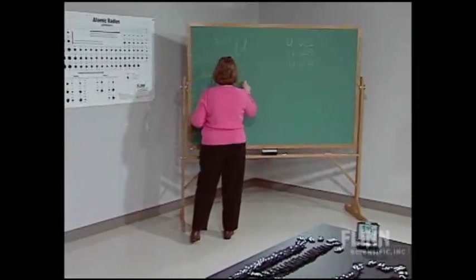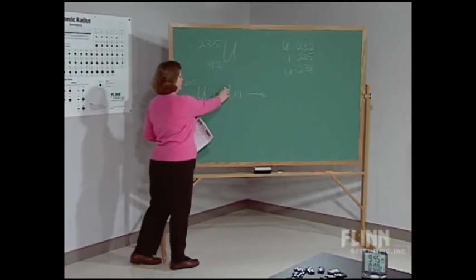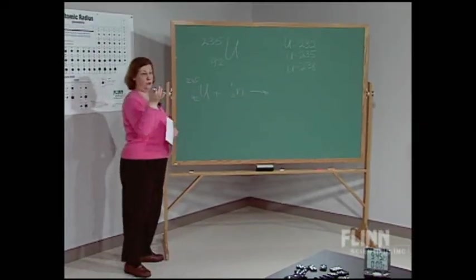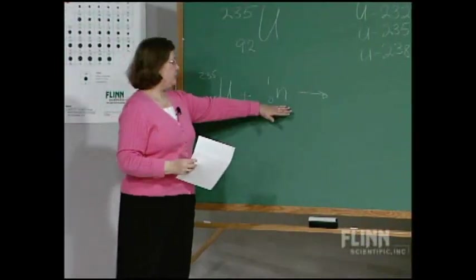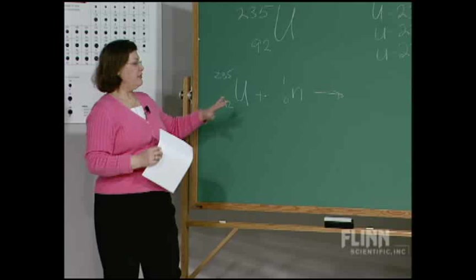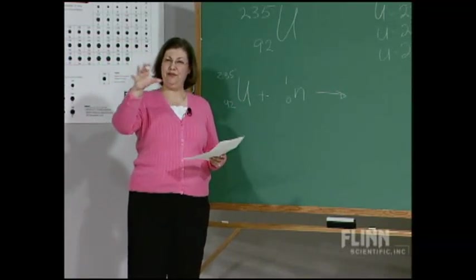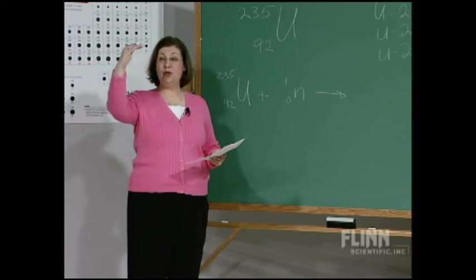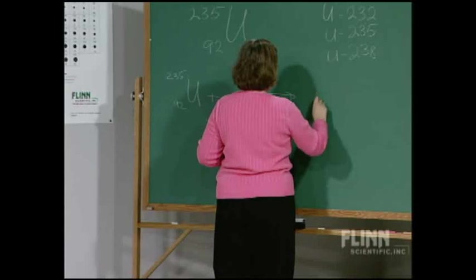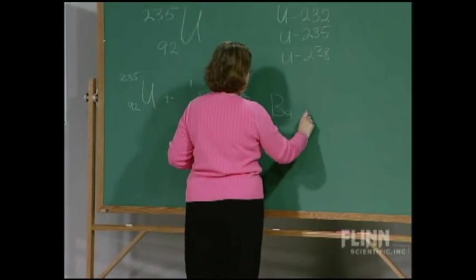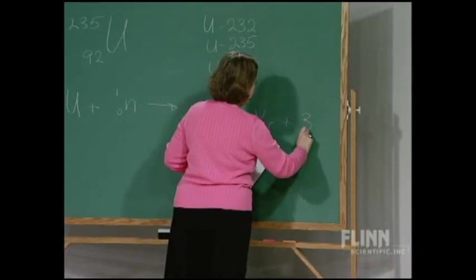The uranium-235 is bombarded with a neutron source, and so we're going to write here the symbol for a neutron. A neutron has zero charge and has a mass of one atomic mass unit. When that splits apart, when the neutron hits the uranium, there are several different pathways for fission. I'm going to write one possible equation for the fission of uranium, and that's to give barium plus krypton plus three neutrons.